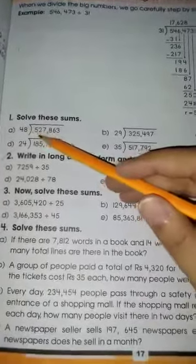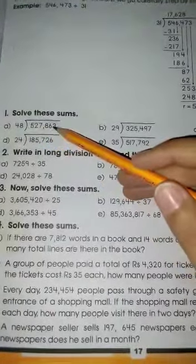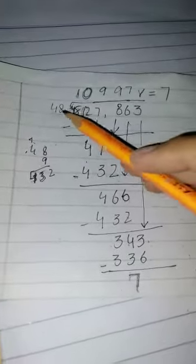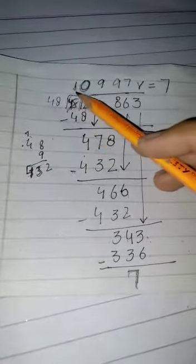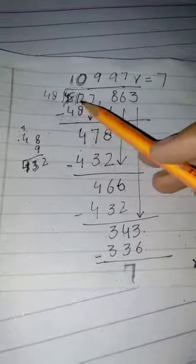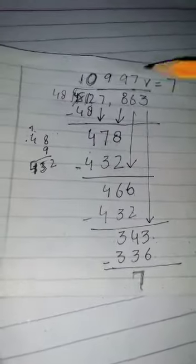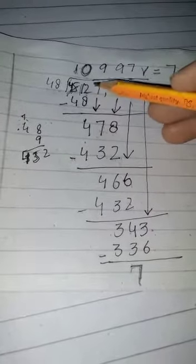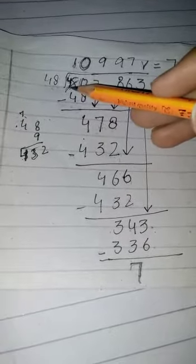This value is given 527,863 divided by 48. 5 and 2. Values jo hain, woh sab se pehle hamein given hain. 2 values ko hum ne consider karna hai.